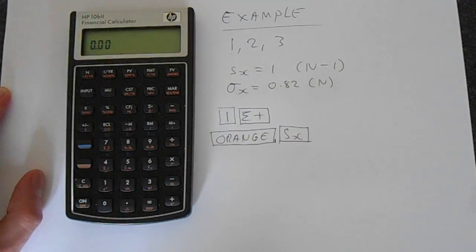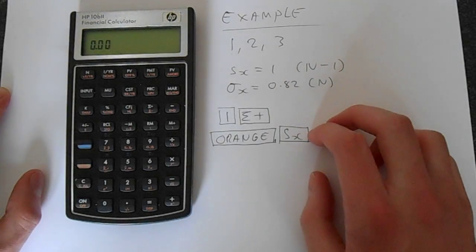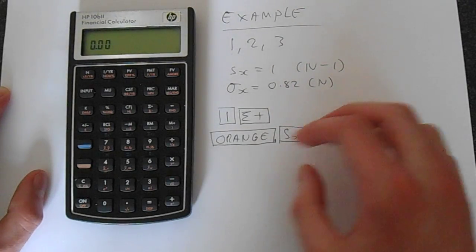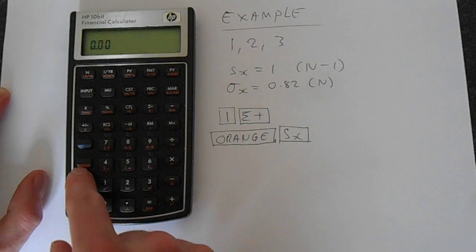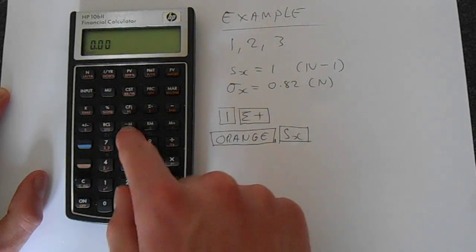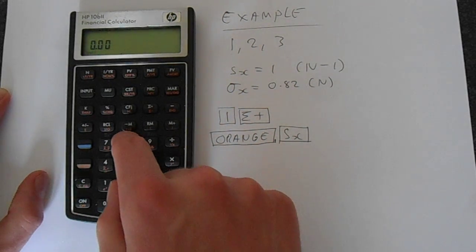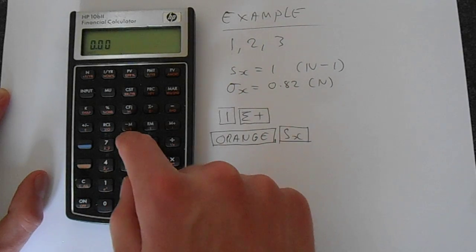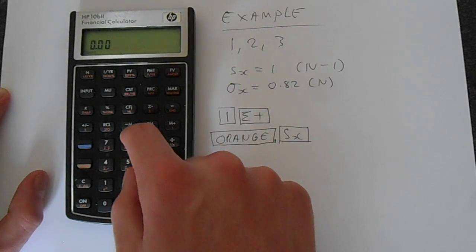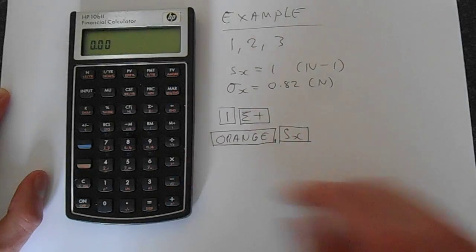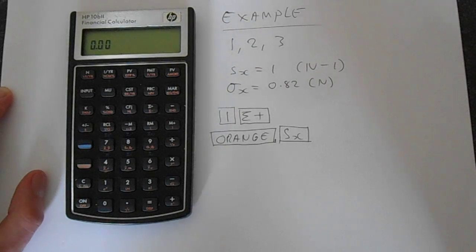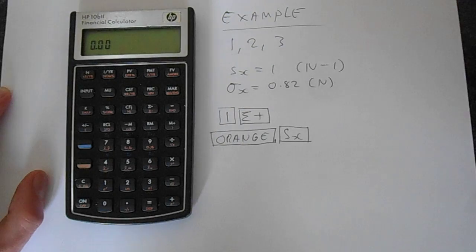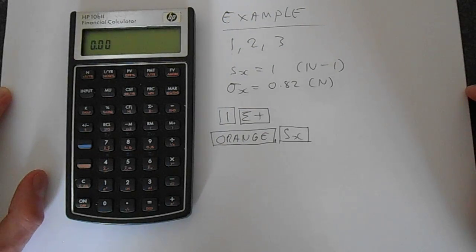So when we come to do this, the first thing that we'll do is we will make sure that the statistics memory of the calculator is cleared. So you press this orange button here, and then on this m button, you'll see there's this c for clear. And then you've got this sigma, which is for statistics. So if we press that, we can now rest assured that the calculator no longer has any data in its statistics memory.